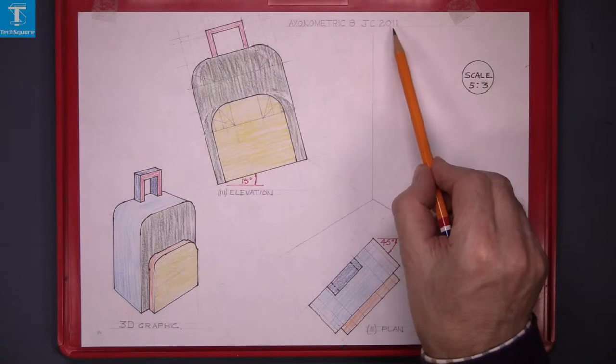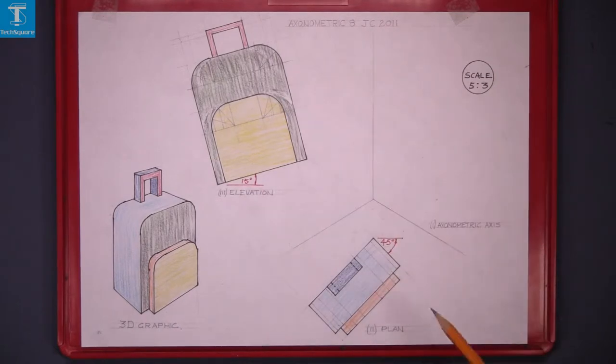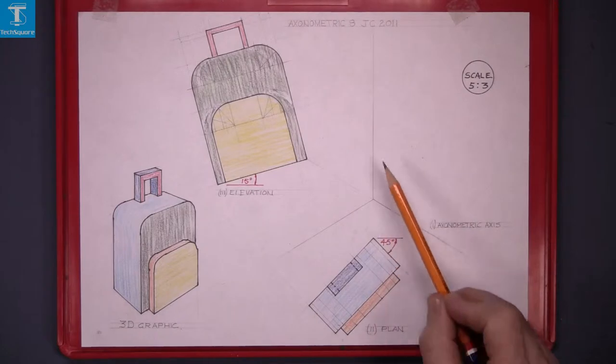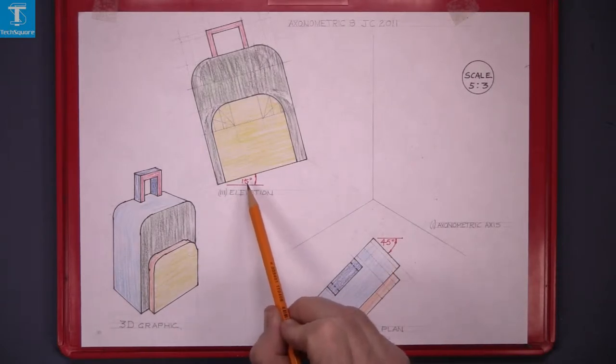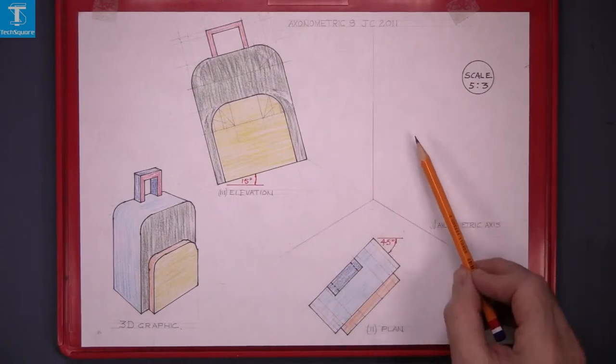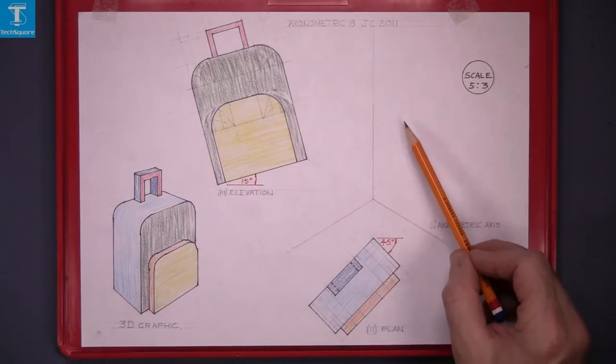Axonometric 8 Junior Share 2011. First, you're asked to draw the axonometric axis. Second part is draw the plan at 45 degrees and third, draw the elevation at 15 degrees. The fourth part of the question is draw the isometric view using axonometric projection.